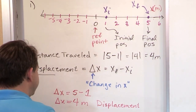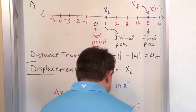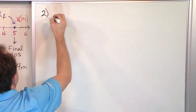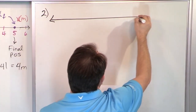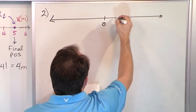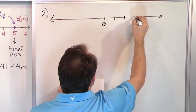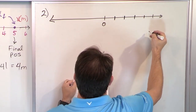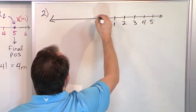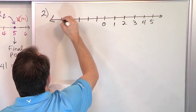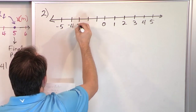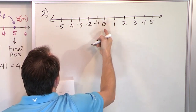So we throw away the sign to find distance, but displacement by definition can be positive for moving right and negative for moving left — we keep the sign because it's useful information. Let's solidify this by doing another quick example. Draw another number line with the origin, going from negative five to five. Let's say you're given an initial position at x equal to four, and a final position at x equal to two — so you're walking towards the front door, kind of backwards.